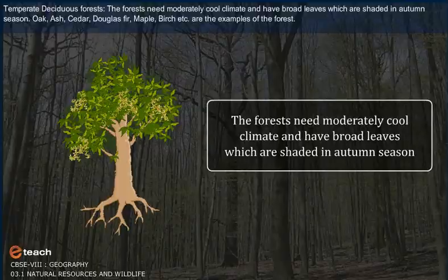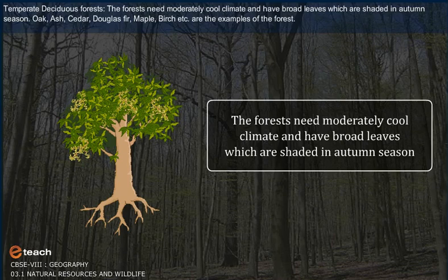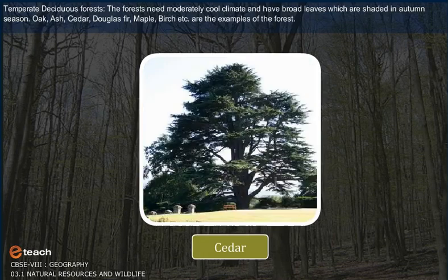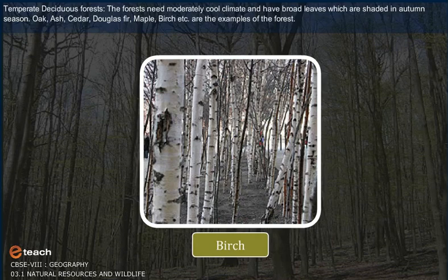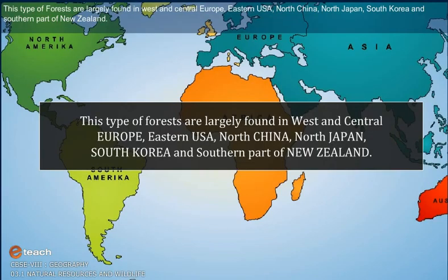Temperate Deciduous Forest. These forests need a moderately cool climate and have broad leaves which are shed in autumn season. Oak, ash, cedar, Douglas fir, maple, birch etc. are examples of these forests. This type of forest is largely found in West and Central Europe, Eastern USA, North China, North Japan, South Korea and the southern part of New Zealand.